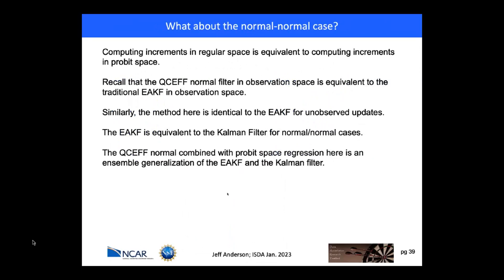In the normal-normal case — just standard data assimilation — since the probit (phi inverse) is the inverse of the normal CDF, and if I assume a normal prior, then the quantile distribution is just the normal and these transforms cancel out. So the standard normal-normal distribution is just the same linear regression in the standard space with an EAKF. Since the EAKF is exactly the Kalman filter for a normal-normal example, this algorithm is simply a complete generalization of the standard Kalman filter.